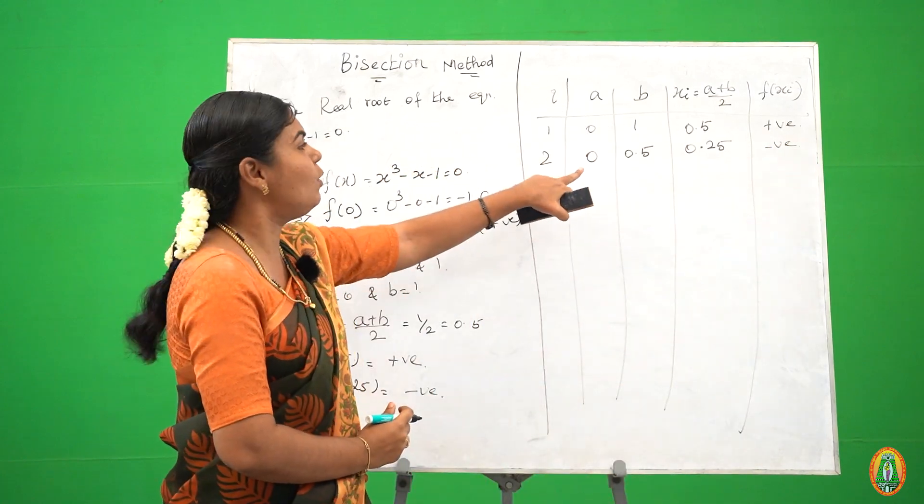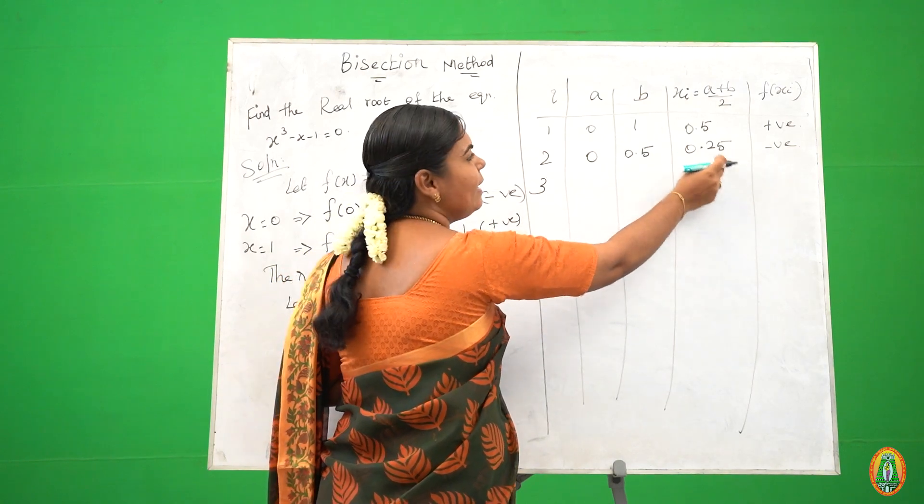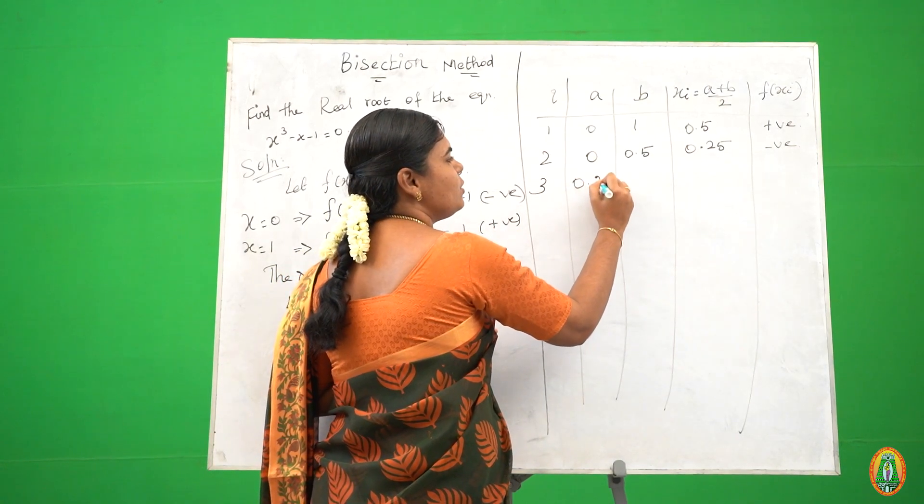We change the root in a. We change the root a to x1, 0.25.